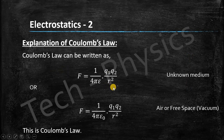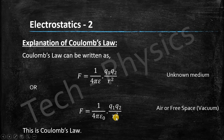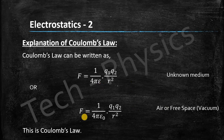The mathematical form of Coulomb's law can be written as F = 1/(4πε) × Q1×Q2/R², or F = 1/(4πε₀) × Q1×Q2/R². The first formula is for an unknown medium and the second is for air or free space. Here epsilon is the permittivity of the medium and epsilon naught is the permittivity of free space, air or vacuum.